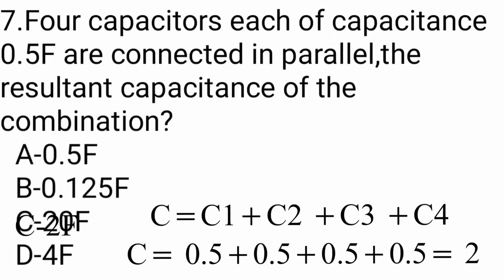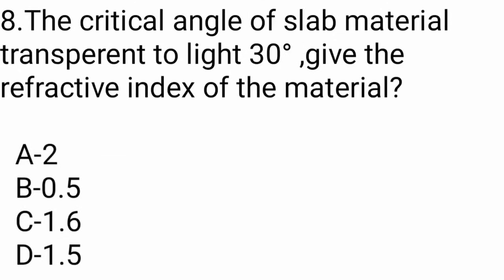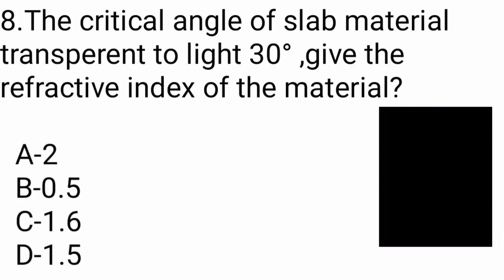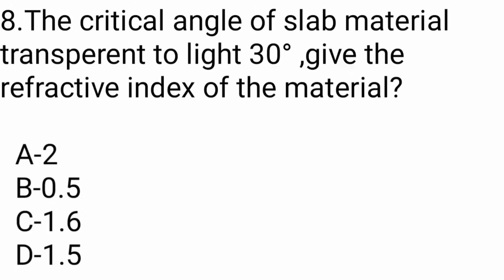Question number 8: The critical angle of a slab material transparent to light is 30 degrees. Find the refractive index of the material. Options: 2, 0.5, 1.6, or 1.5. The answer is 2.